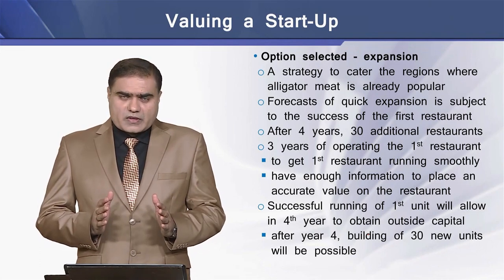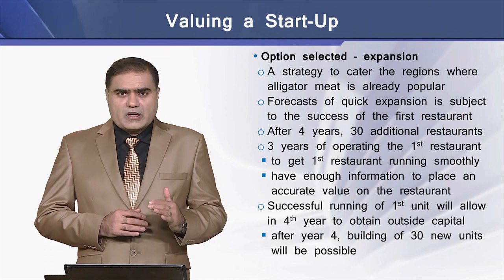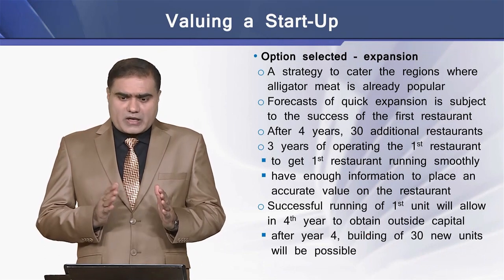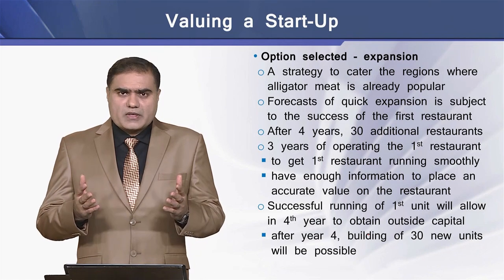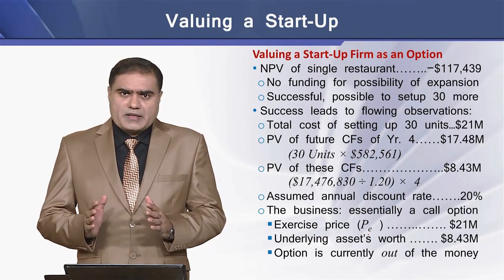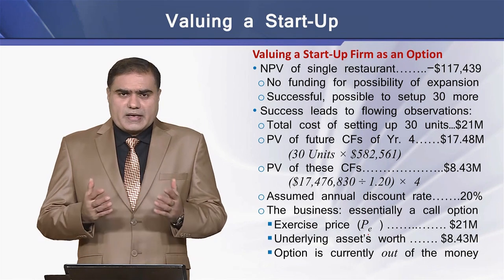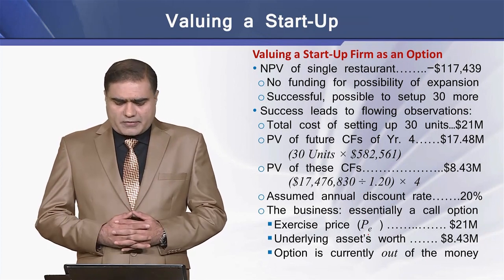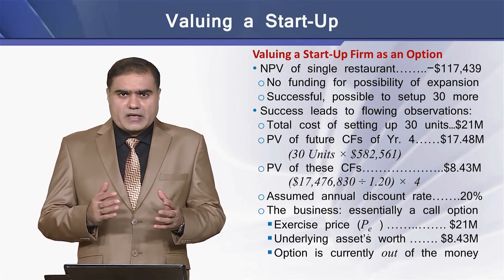The successful running of the first unit will open avenues for raising new capital from external sources in the fourth year, enabling the firm to open 30 new restaurants in the region. The net present value of the single restaurant is negative at $117,439, so there is no chance of additional capital funding unless the firm is successful, which would then allow for setting up 30 new units.